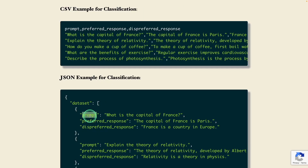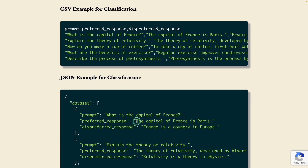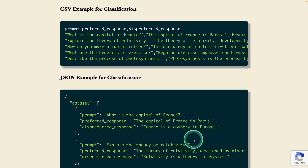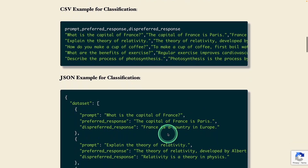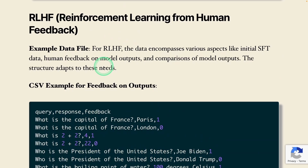Next is direct preference optimization — DPO. For example, we have a prompt, we have a preferred response, and we have a dispreferred response. The prompt is: what is the capital of France? The preferred response is: the capital of France is Paris. The dispreferred response is: France is a country in Europe. So in this way we are teaching the large language model what is the preferred response.